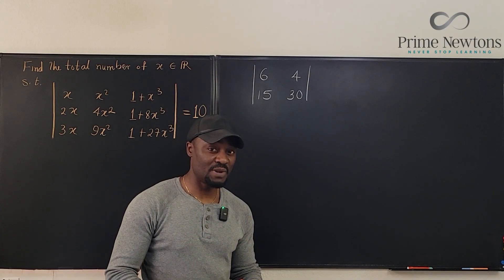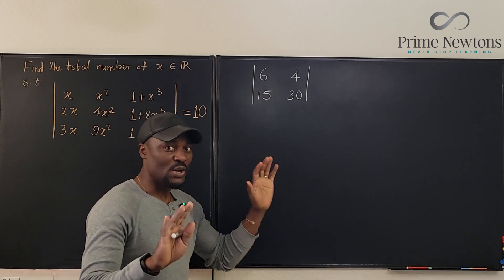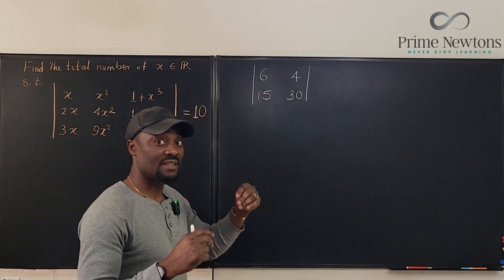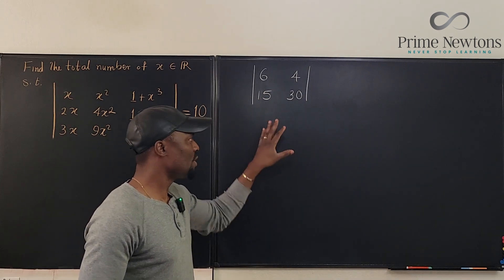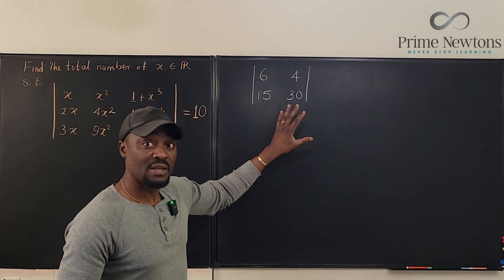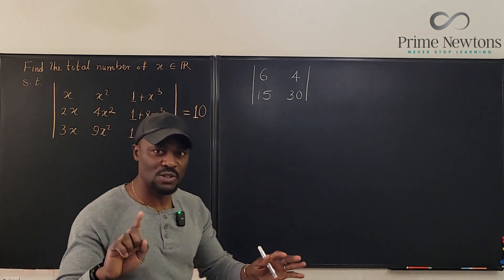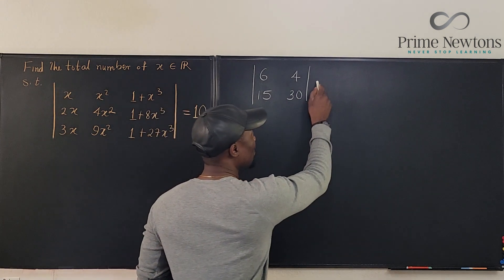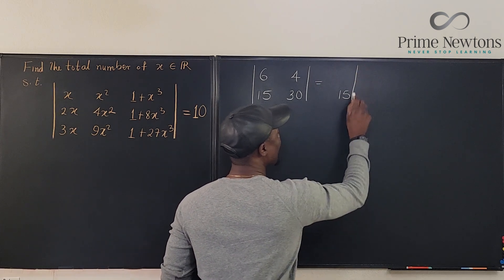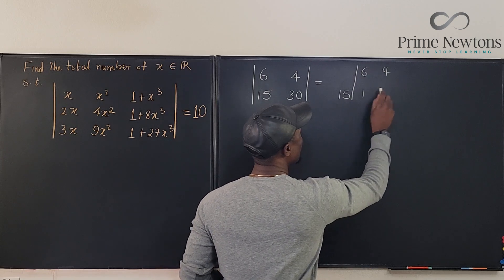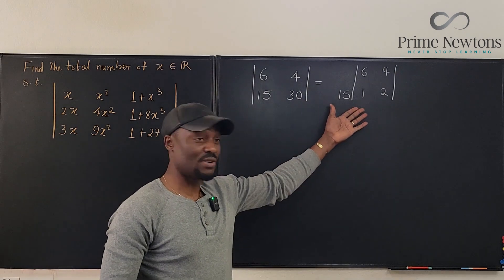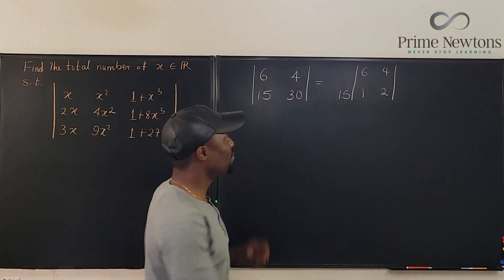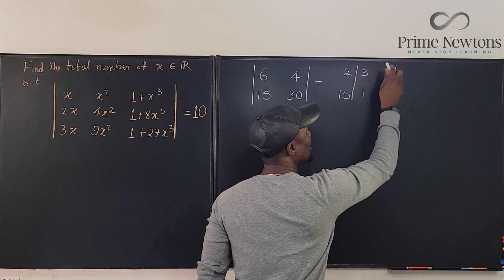There is a second property of determinants relevant to this problem. You can easily compute the determinant of a matrix like 6, 4, 15, 30 by multiplying 6×30=180 and 4×15=60, giving 180-60=120. However, if the numbers are large, you can factor out common values. What is common to 15 and 30? It's 15 — you can pull it out, leaving 6, 4, 1, 2. You can also factor out 2 from the top row, changing it to 3, 2.